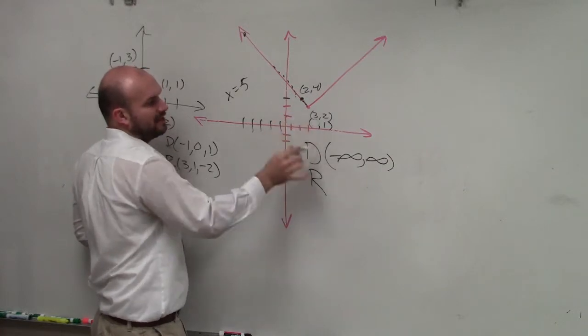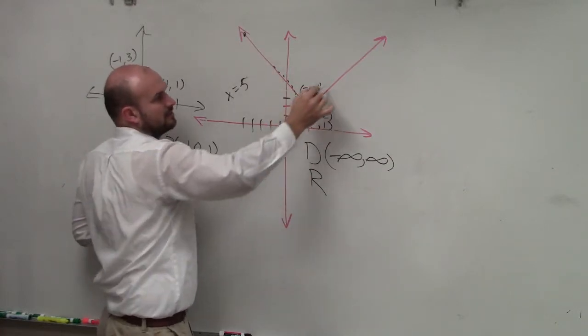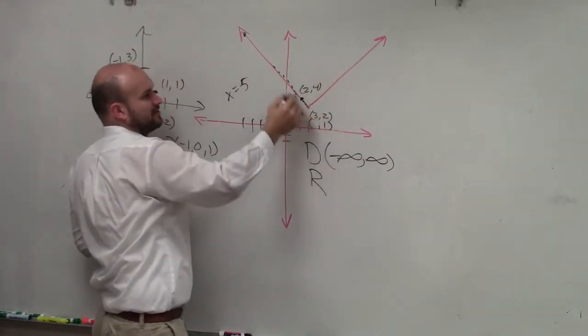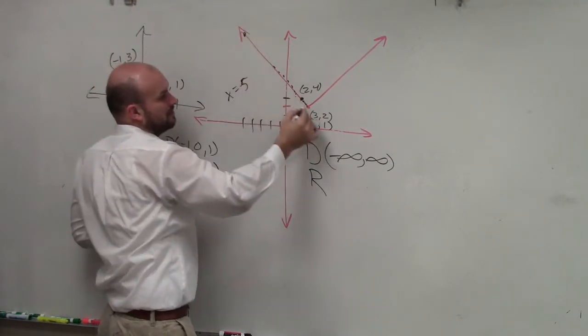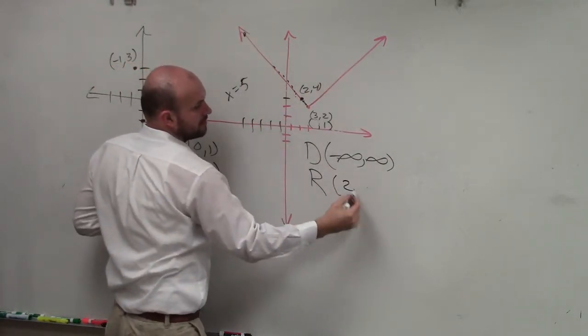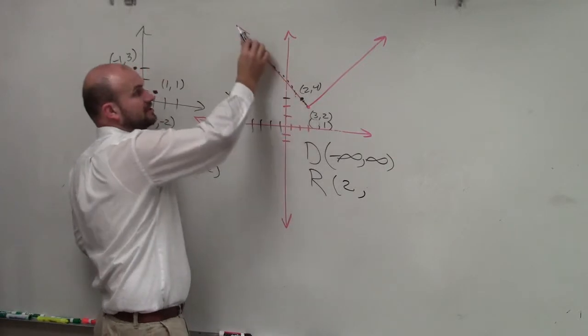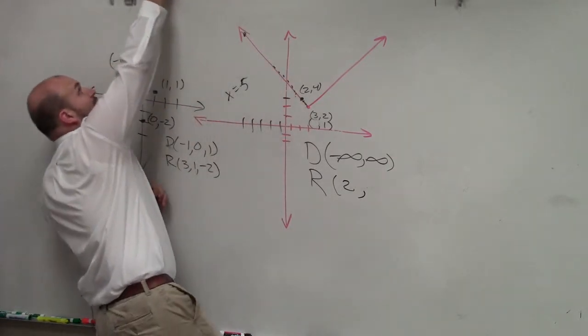So what is the lowest y value that this graph has? What is the lowest y value it goes to? 2. And then what's the highest y value it's going to go to? Infinity.